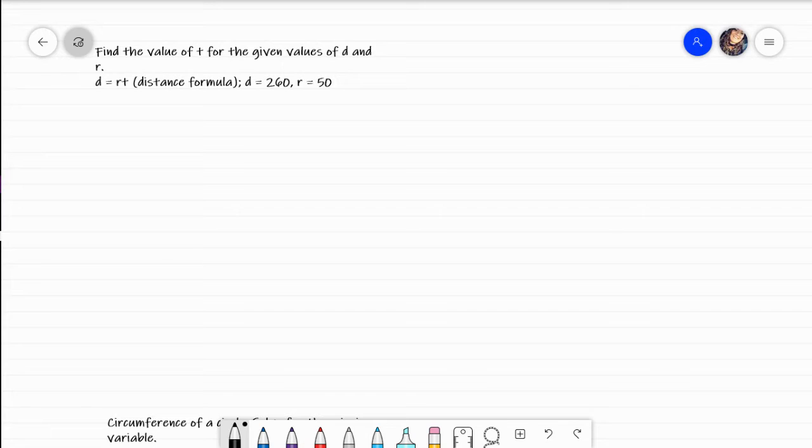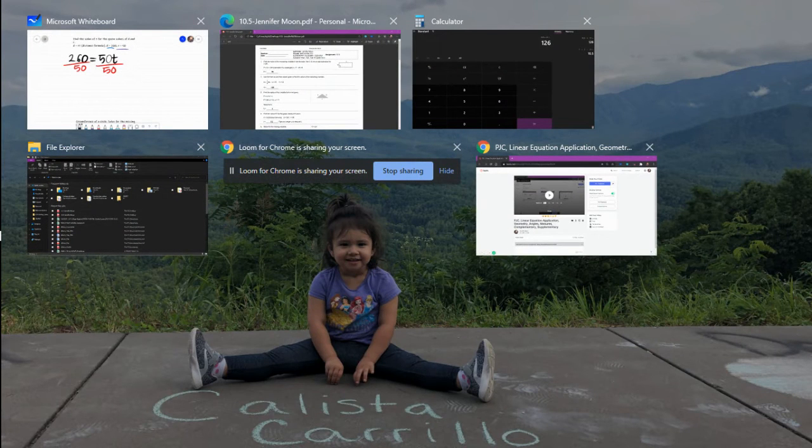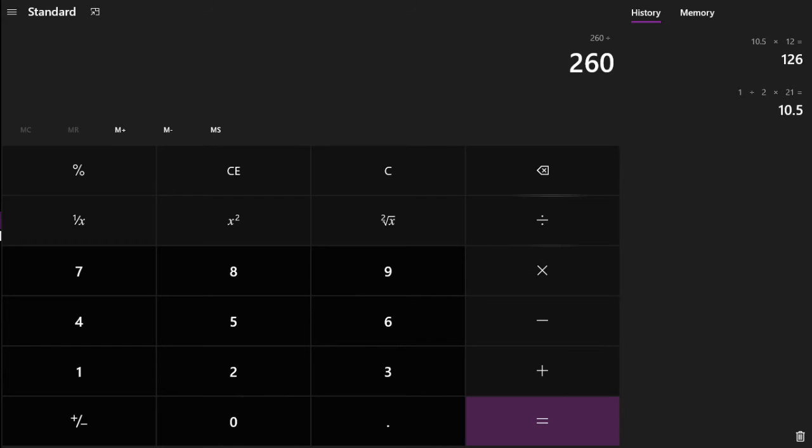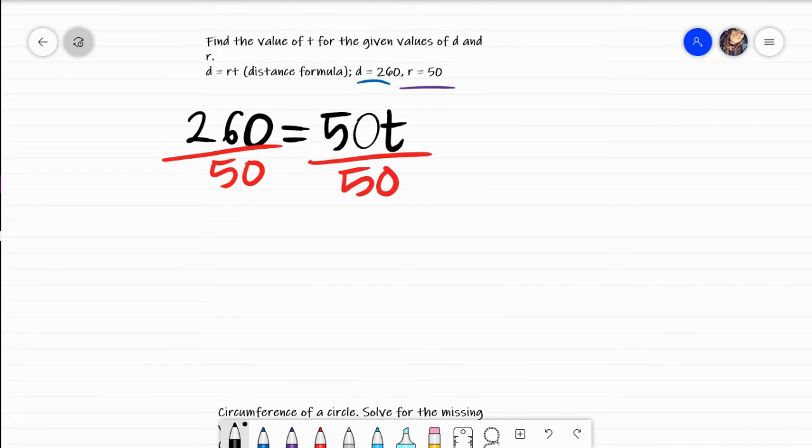Right here it says to find the value of T for the given values of D and R. If you see D equals R times T, what that is is the distance formula. I notice that I am given D and I am given R. Just plugging everything in, I would get 260 equals R times T. What I would do here is I would divide both sides by 50. I got 5.2, and then those cancel, I get T.